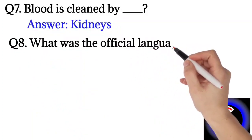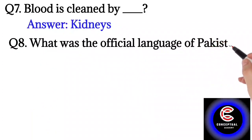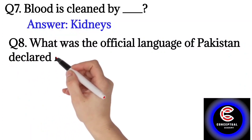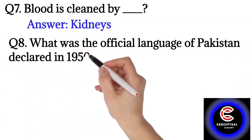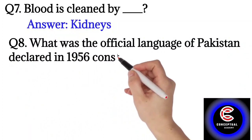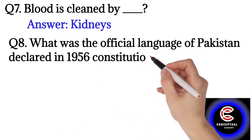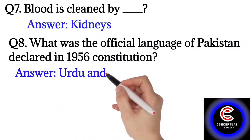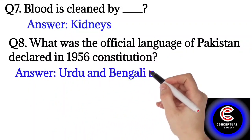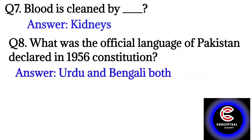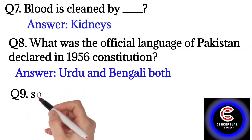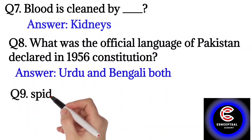Question number eight: what was the official language of Pakistan declared in the 1956 constitution? The answer is Urdu and Bengali both.